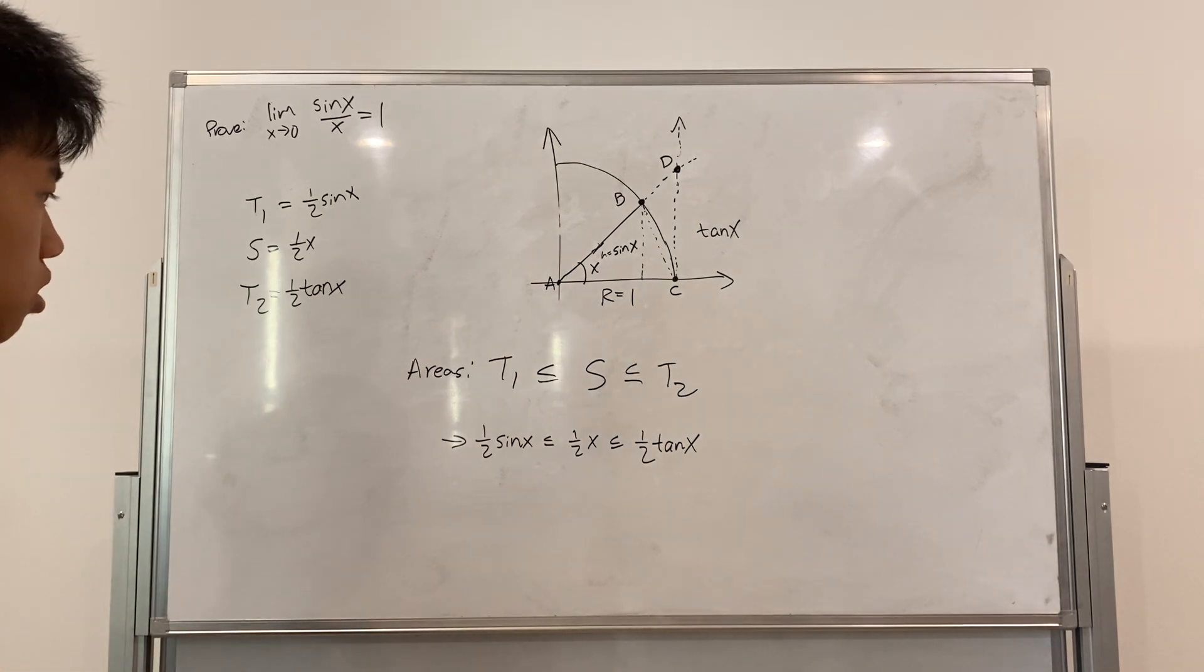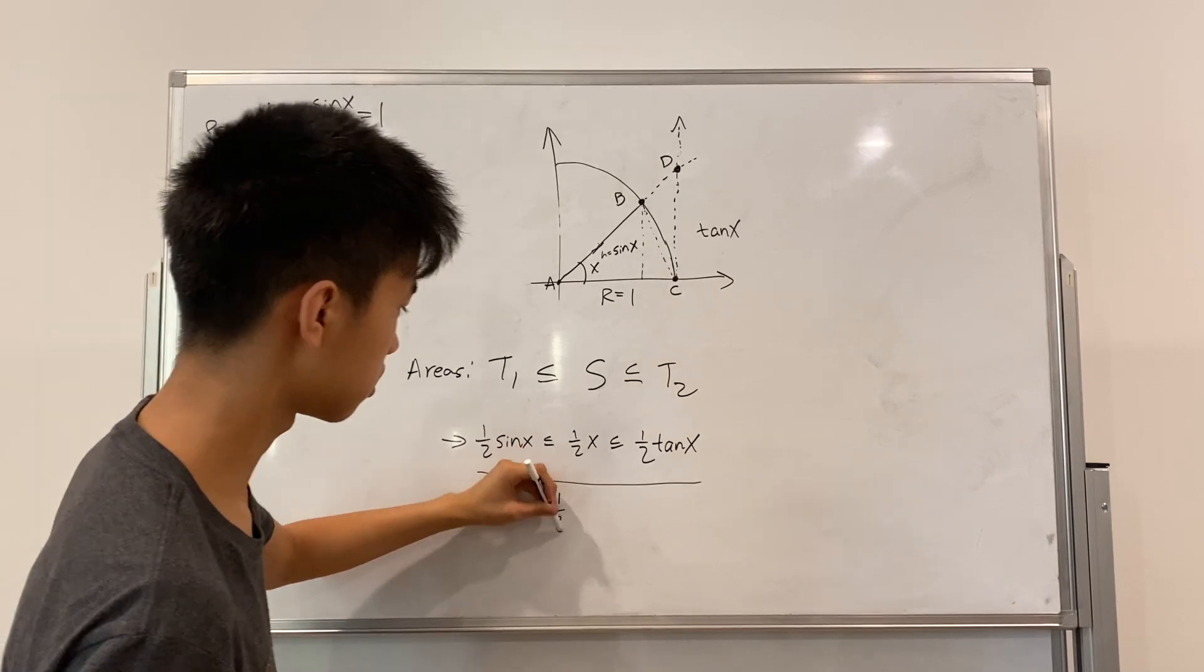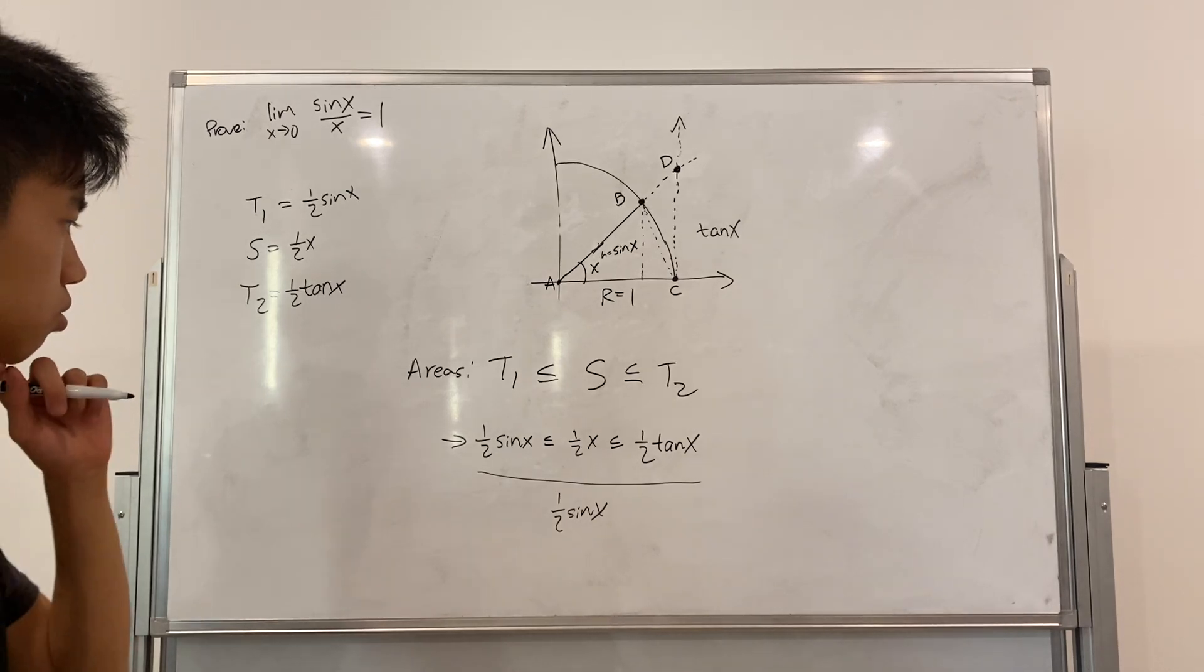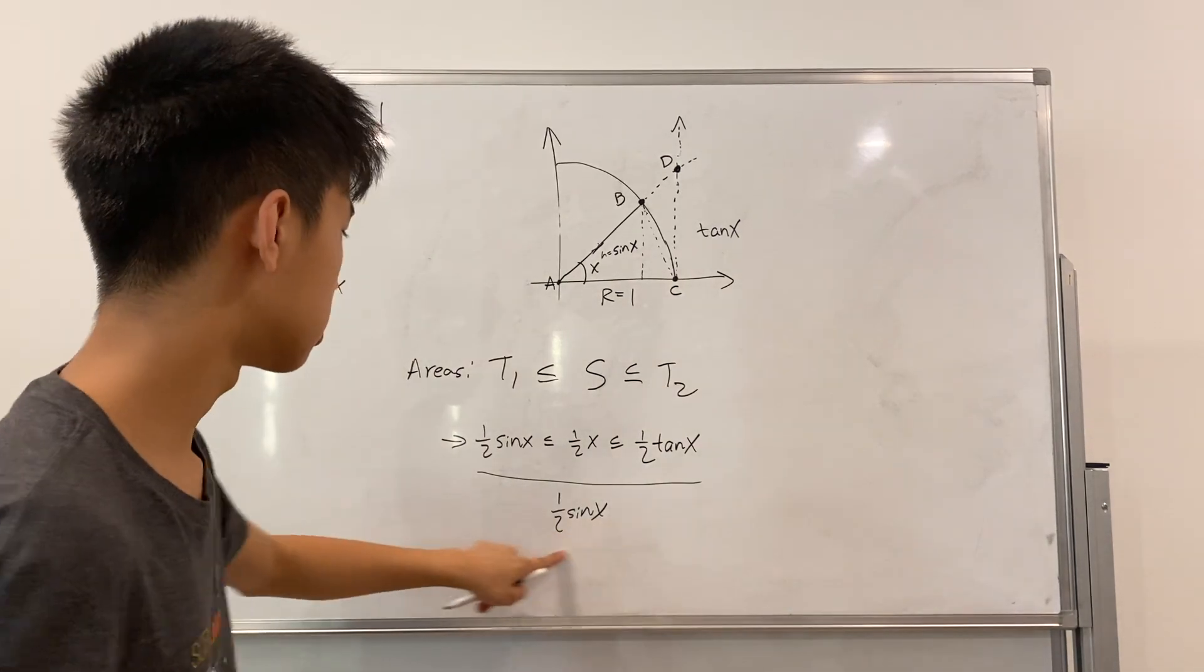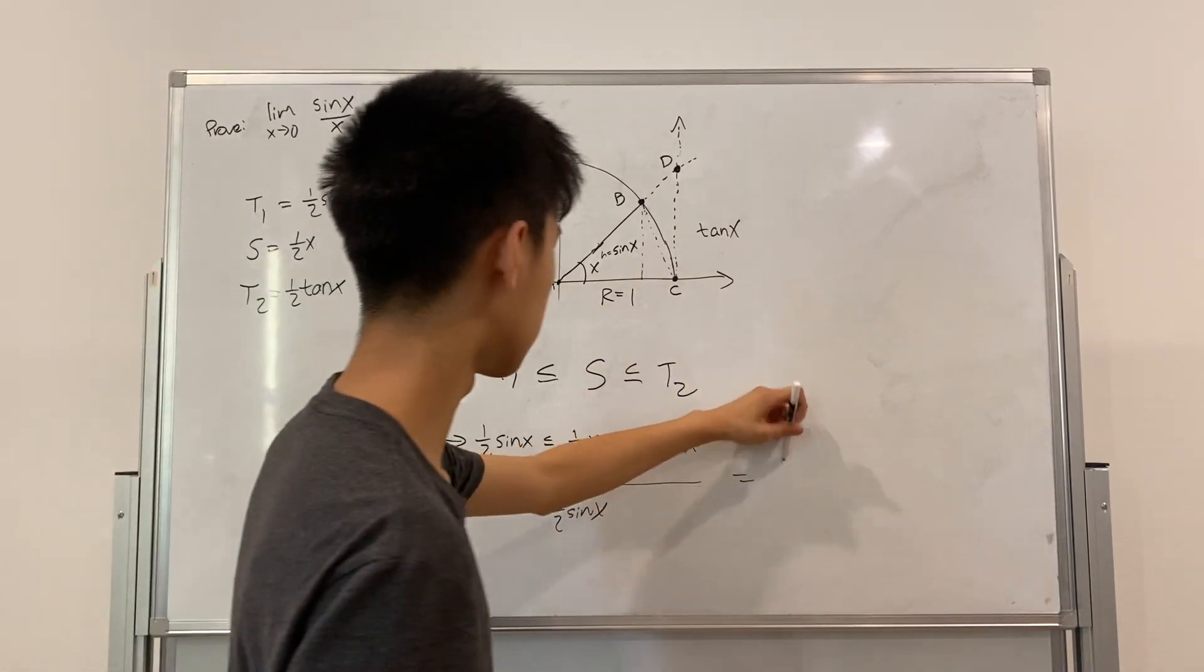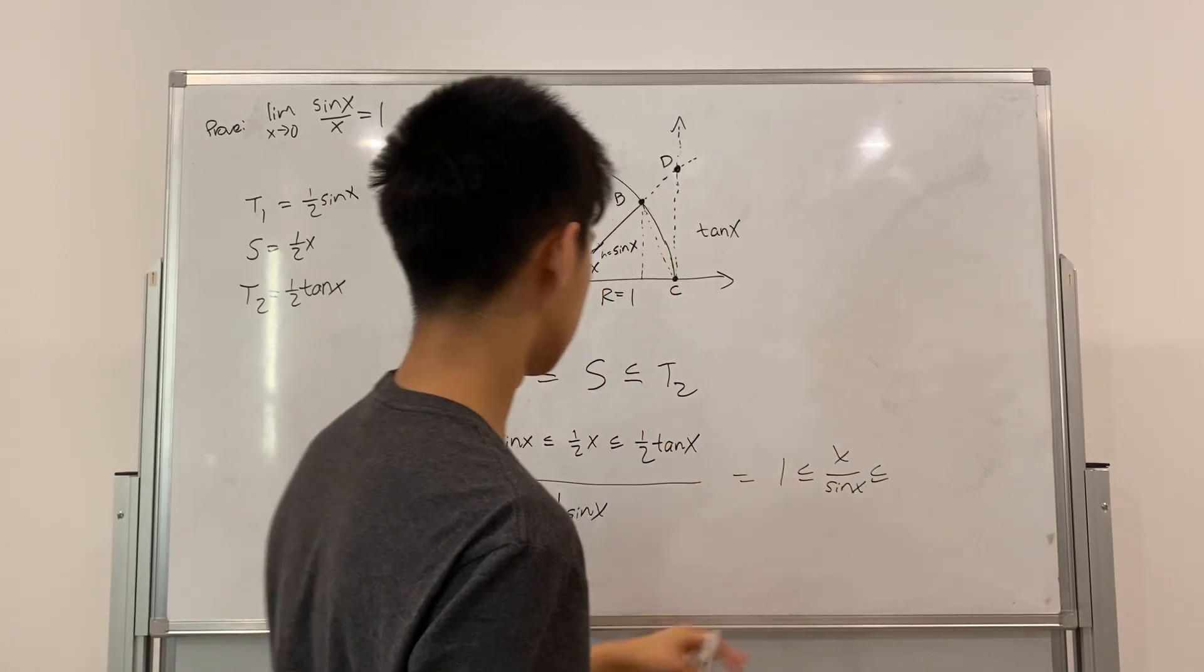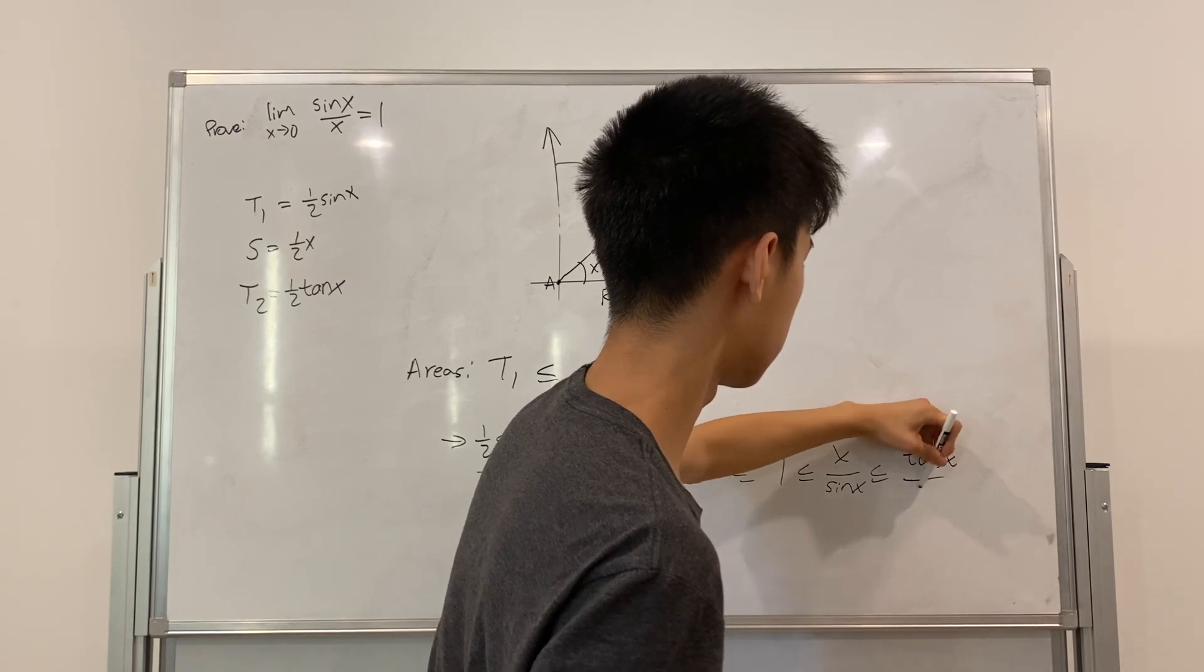So, now, what can we do here? Well, we can divide everything by one half sine of X. And, what does that do for us? Well, let's find out. So, we divide all this. We get one less than X over sine of X, less than tangent X over sine of X.